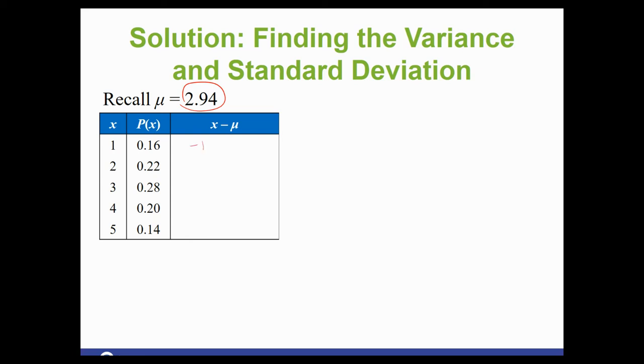Then we've got 2 minus our mean, 3 minus the mean, 4 minus the mean, and 5 minus the mean. Once we have our deviations, now we square them.